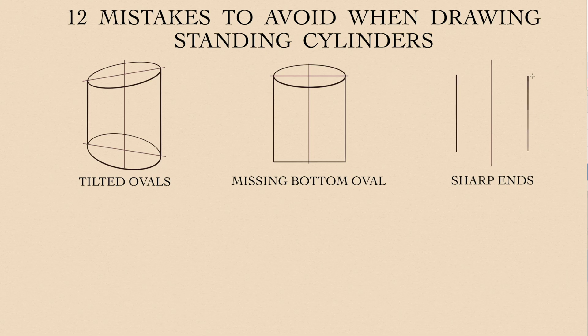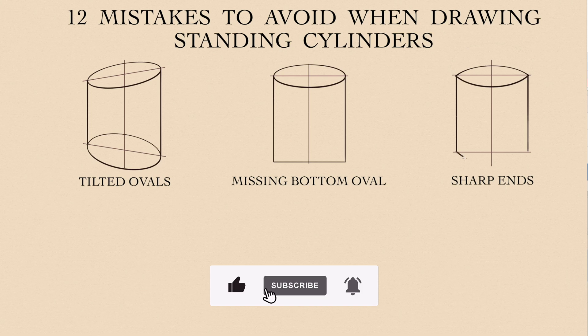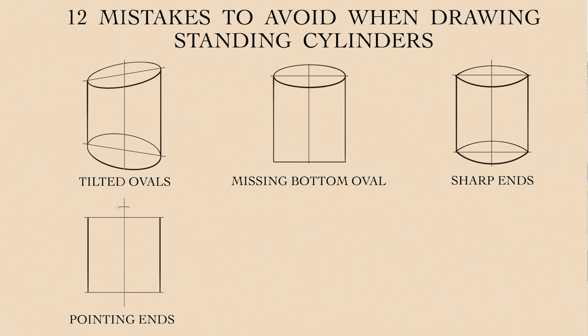Circles do not have corners, so ovals, which are circles in perspective, also cannot have sharp ends. The next mistake is similar, but instead of sharp corners, beginner artists might draw pointing ends, which is also incorrect.